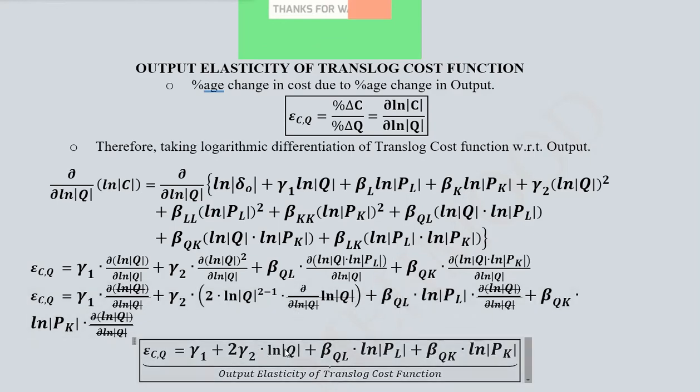You can see that it is dependent upon the three variables: outputs, the price of labour, and the price of capital.